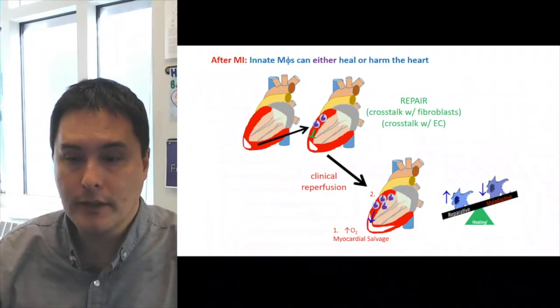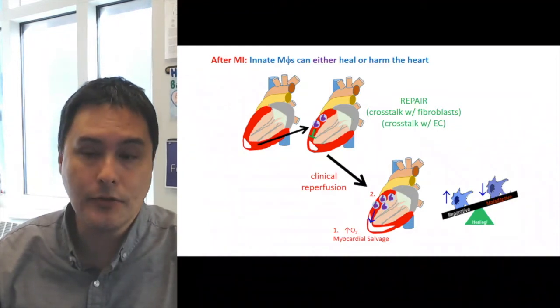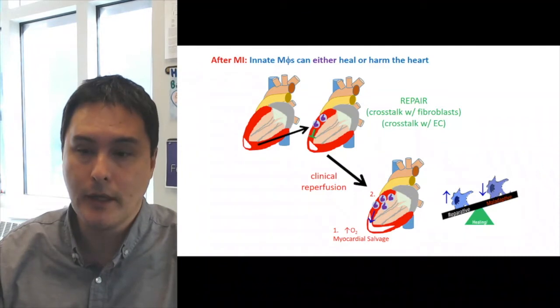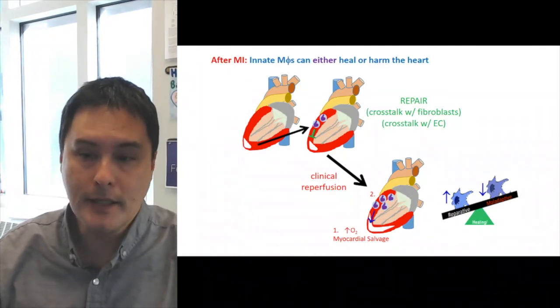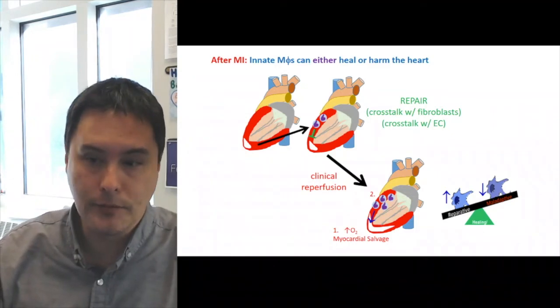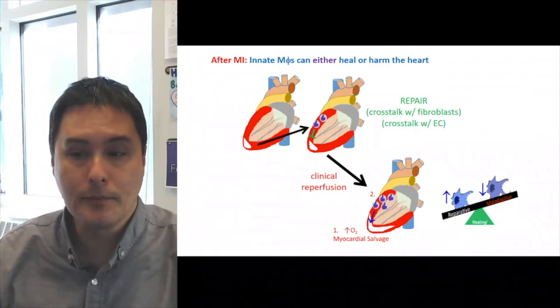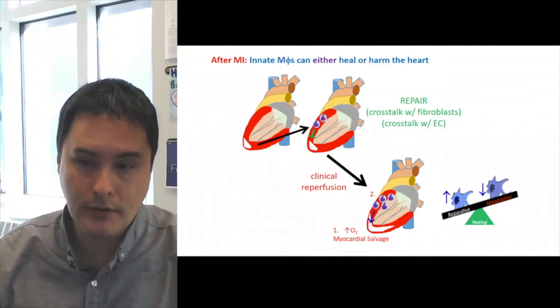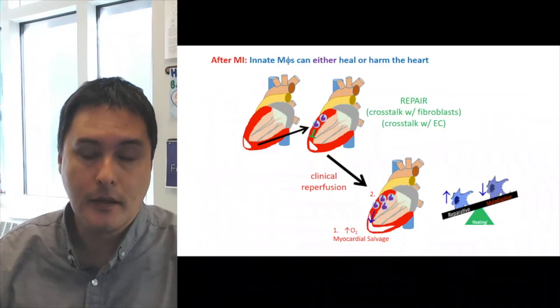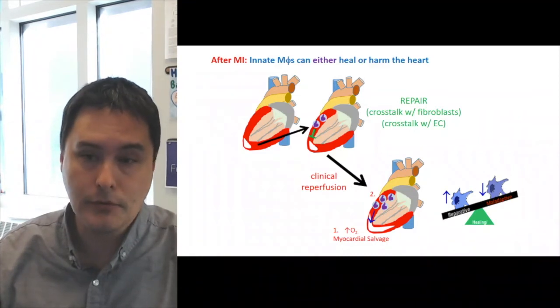Now after clinical reperfusion, this can lead to myocardial salvage but it can also trigger a hyperinflammatory reperfusion injury associated response which is mediated by immune cells such as neutrophils and macrophages. The real key here is to find a balance between optimizing pro-reparative macrophages and suppressing these maladaptive immune cells in order to promote the most optimal healing.